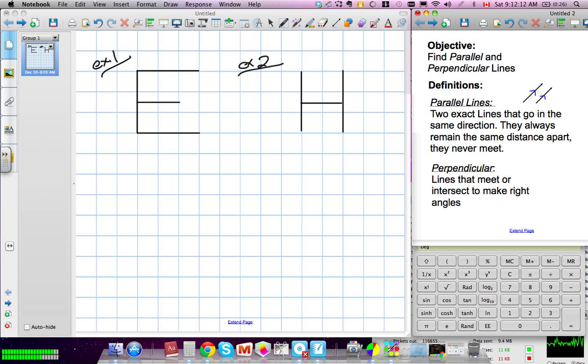And here's an example of a perpendicular. They cross each other, and they create a right angle. Okay, does that make sense? So a little example of those two.